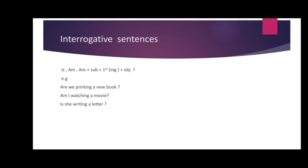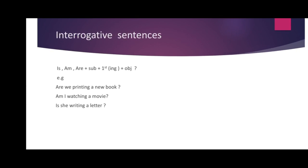Interrogative sentences — look at the structure: is/am/are at the start of the sentence, then subject, then the first form with -ing, then object, and a question mark. Look at the examples: 'Are we printing a new book?' 'Am I watching a movie?' 'Is she writing a letter?' So these are the examples and structure of how you will deal with negative and interrogative sentences.